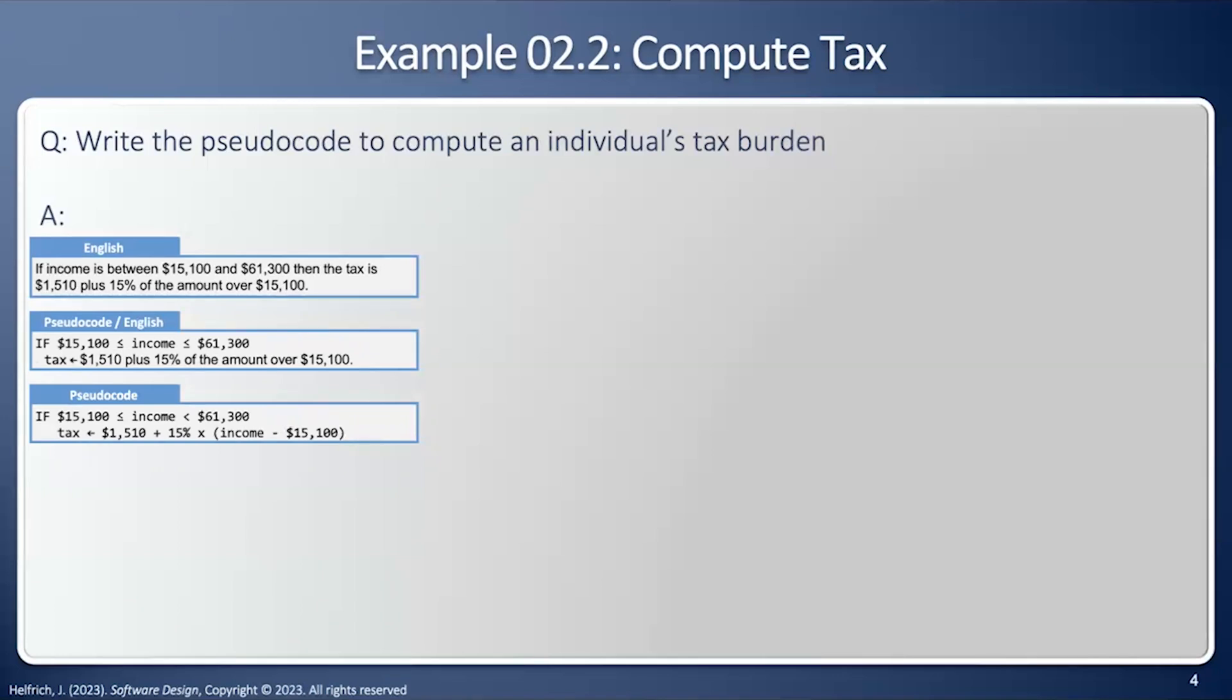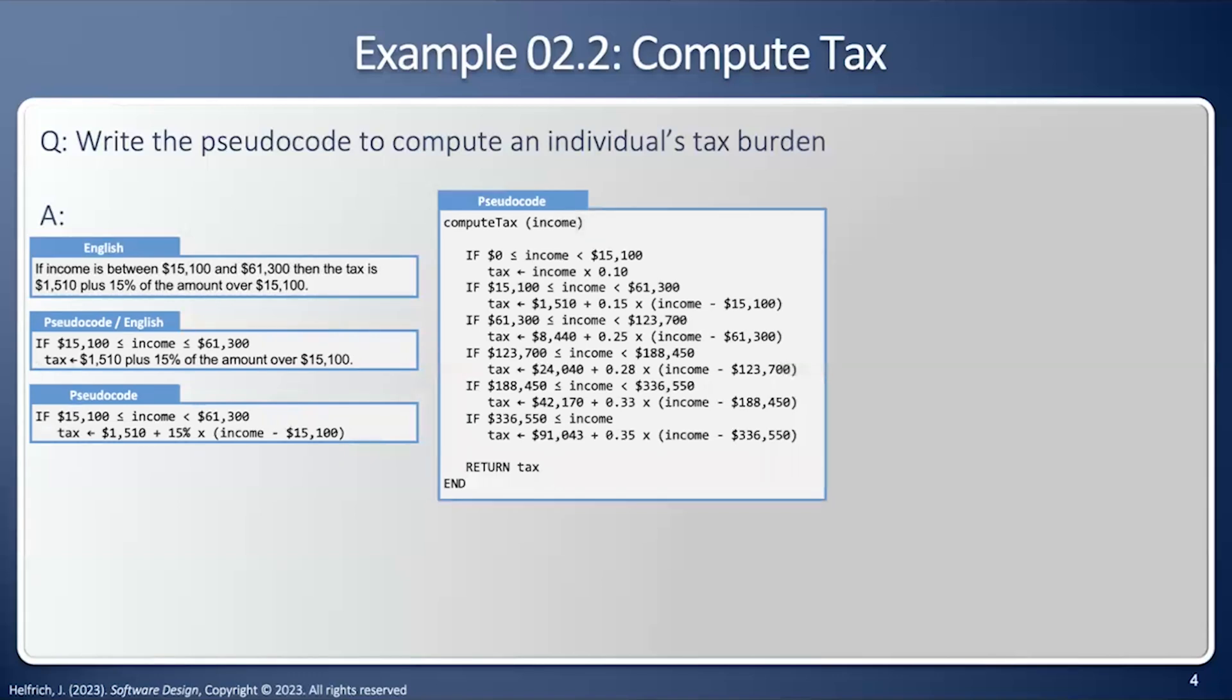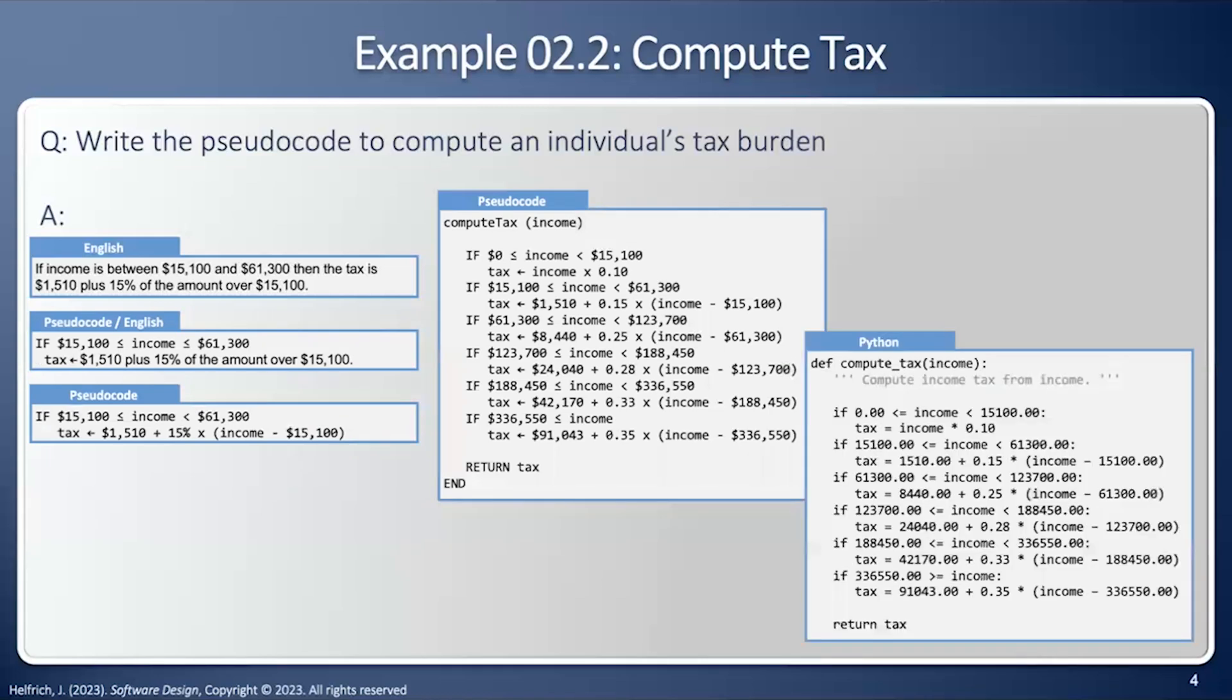This is just one tax bracket. I need to fill it in for all the tax brackets and wrap it in a function. And now I've worked out all the details necessary for the algorithm. The last step is to turn this into my programming language of choice. And once again, I'm going to use Python for that.